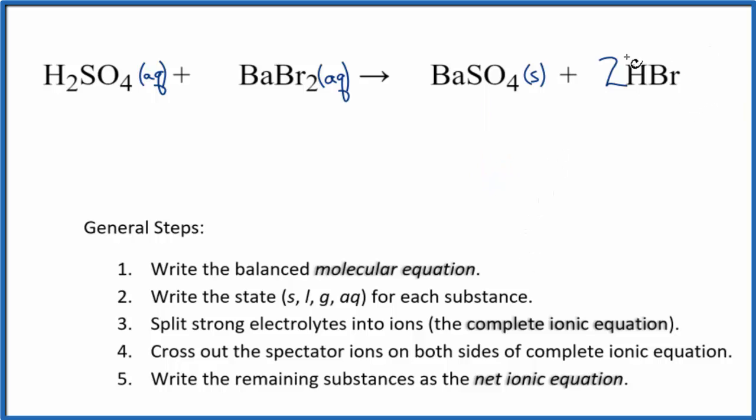Hydrobromic acid is also considered a strong acid, so we're going to write AQ. That's going to be soluble as well. Now we can split the strong electrolytes into their ions for the complete ionic equation.